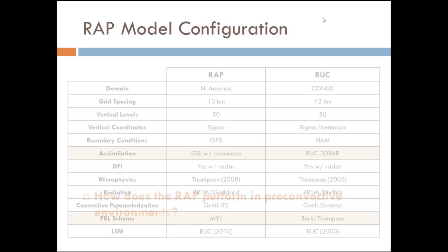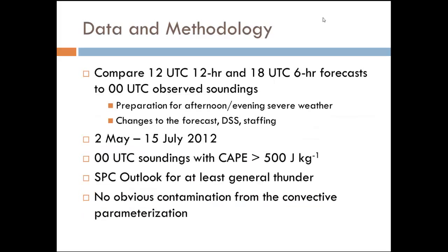That leaves us with how these changes are going to impact our pre-convective environments, and that's essentially what this whole study is about. We looked at the 12Z run and the 18Z run of the RAP — the 12-hour forecast and the 6-hour forecast — everything valid at 0Z, then compared to the 0Z observed soundings. The reason I chose those times is that it's typically when operational staff is starting to prepare for afternoon or evening severe weather: updating the forecast, thinking about DSS, whether to call additional people in.